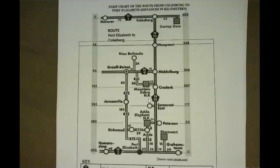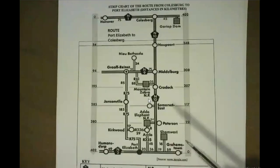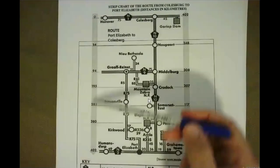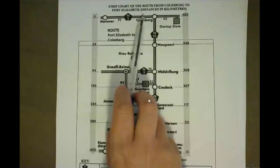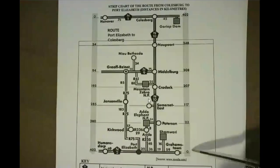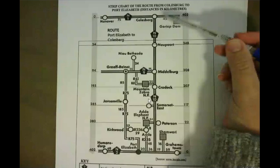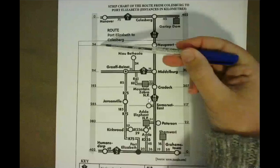The strip map title says 'Strip chart of the route from Colesberg to Port Elizabeth — distances in kilometres.' On the left side we're going from Colesberg to PE, and on the right side from Port Elizabeth to Colesberg. If certain values aren't given on the map, you can use the values on the other side. For example, if the 54 km was blocked out, you could do 402 minus 348 to get 54 — sometimes you work backwards.